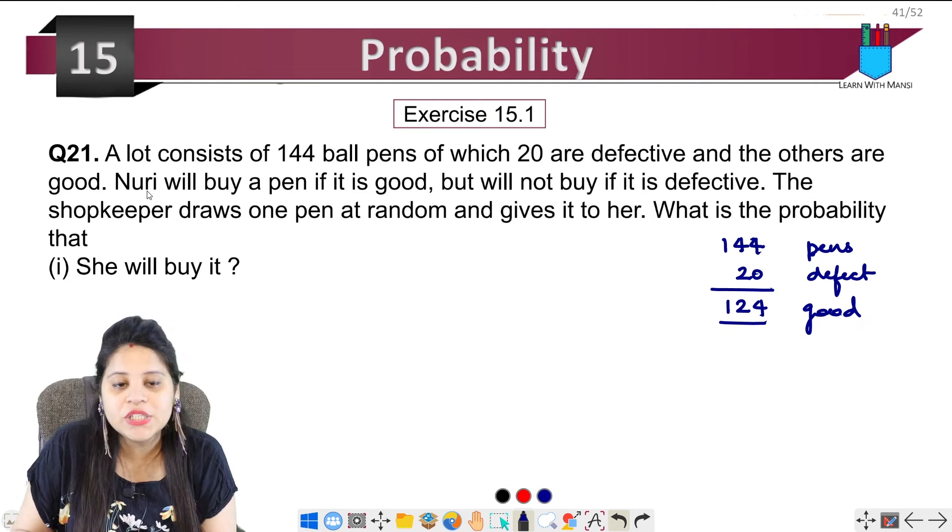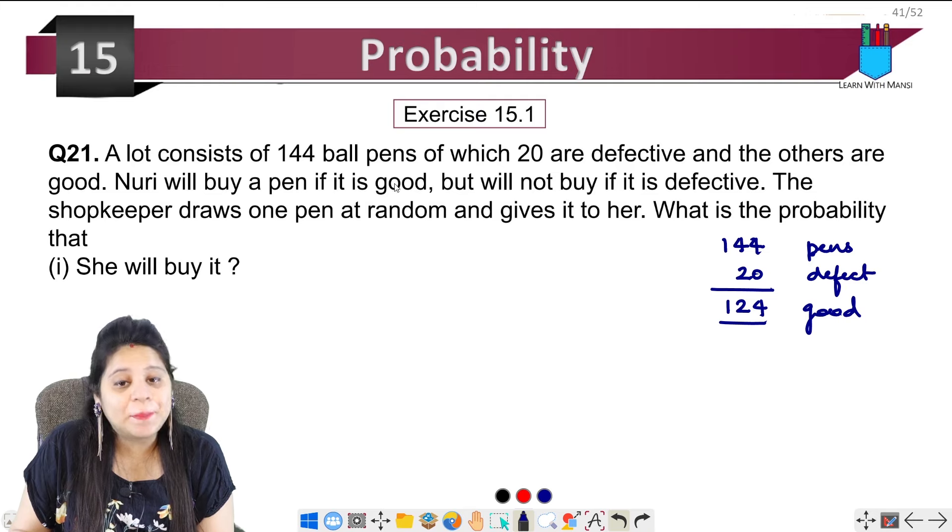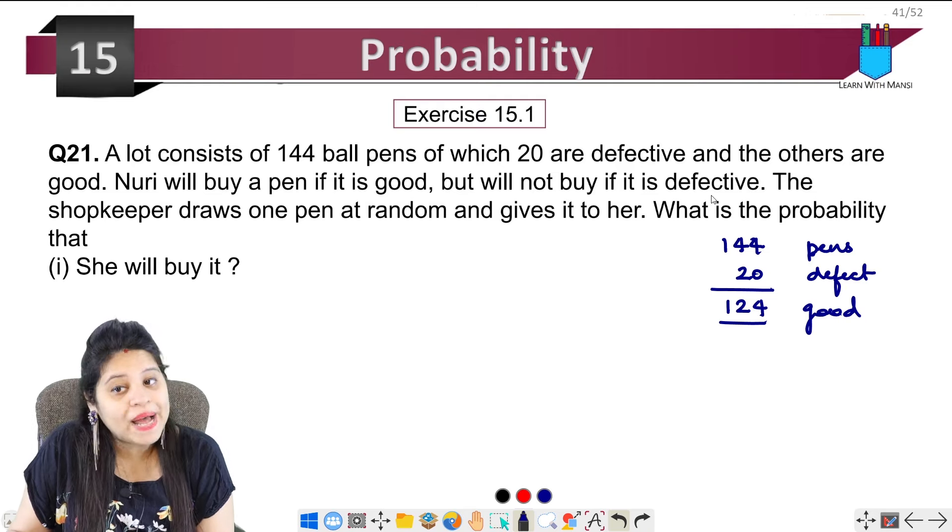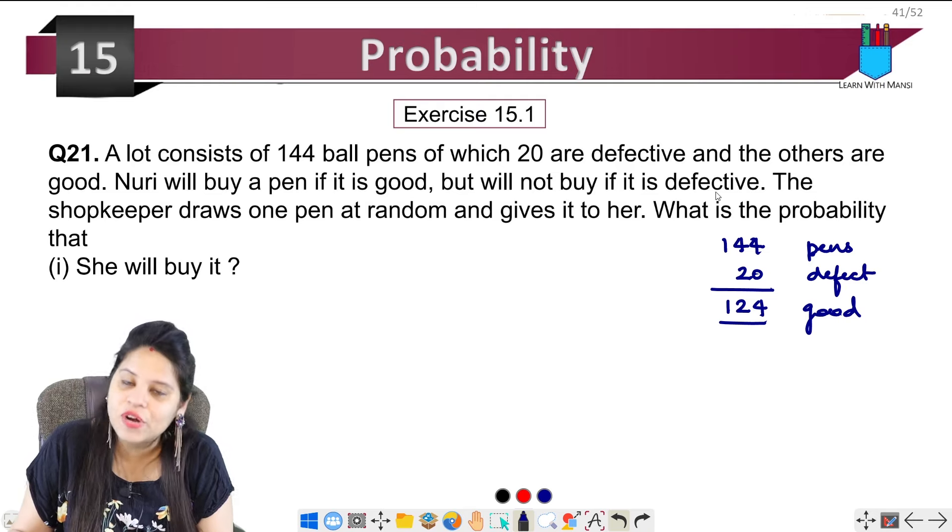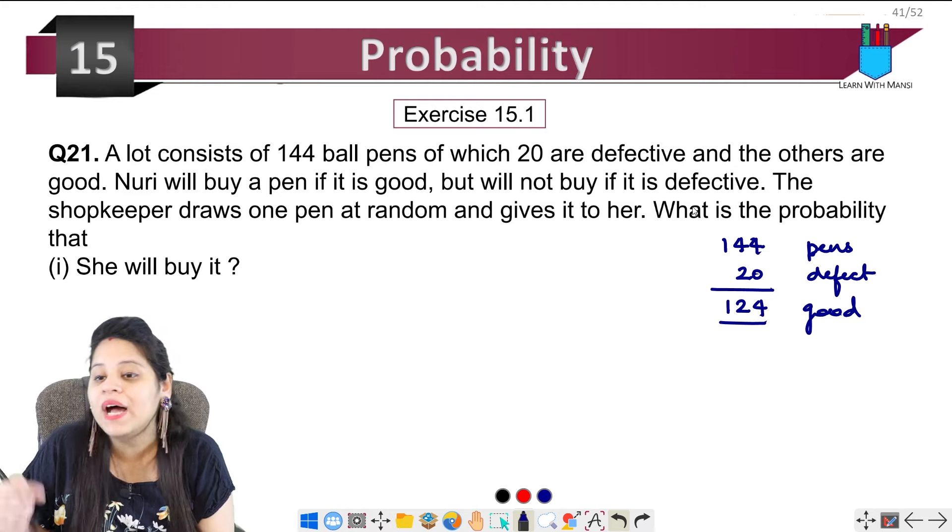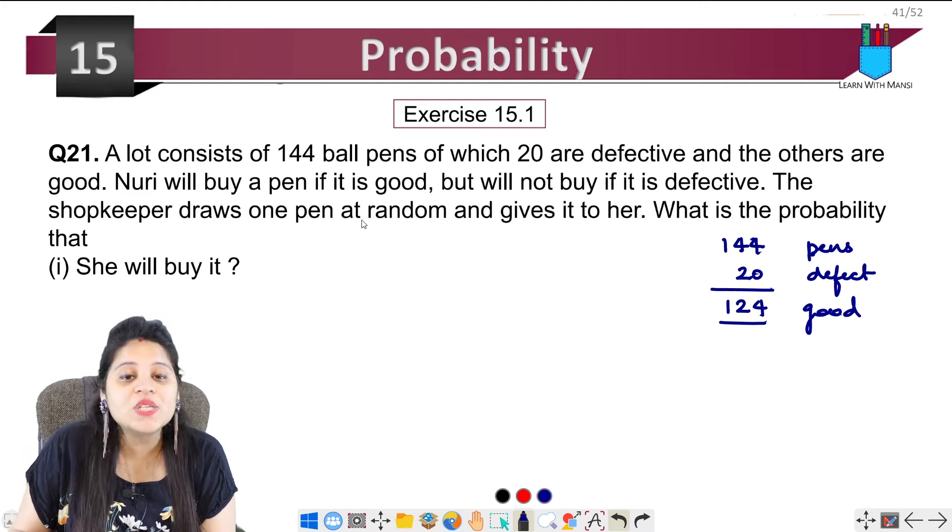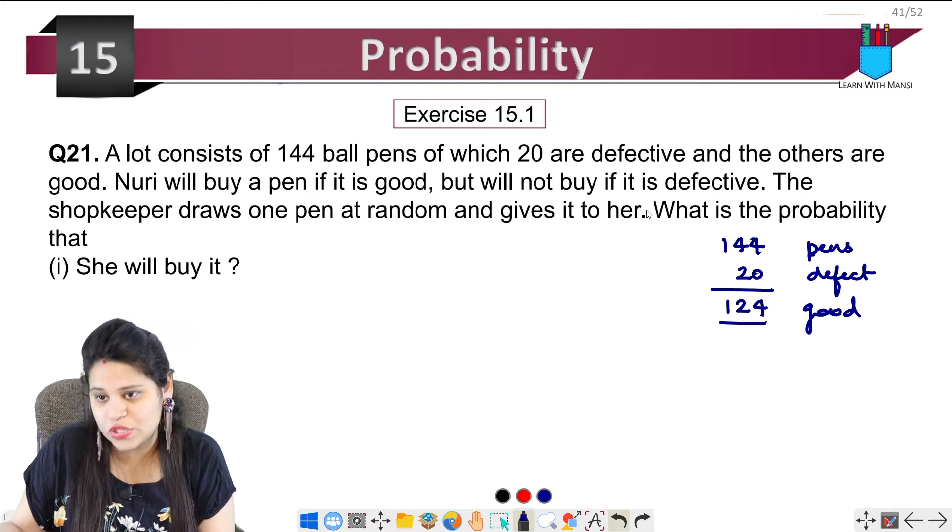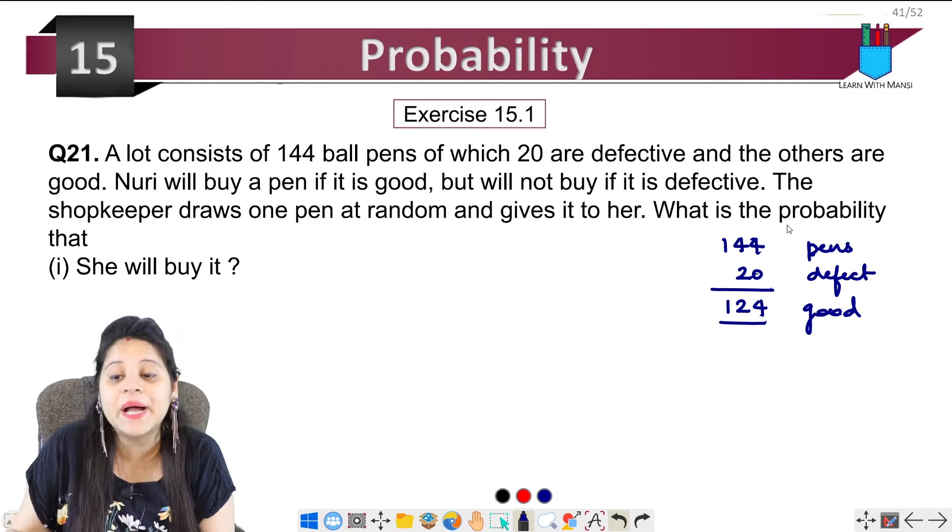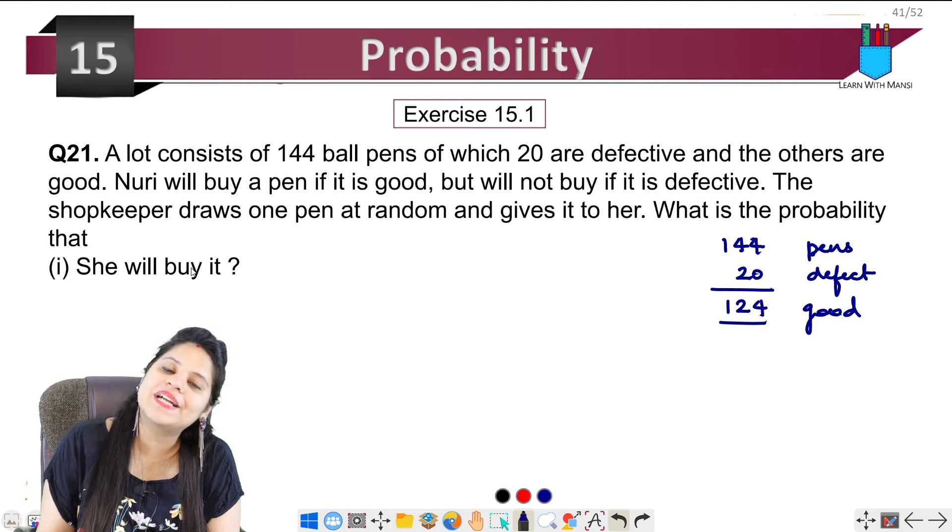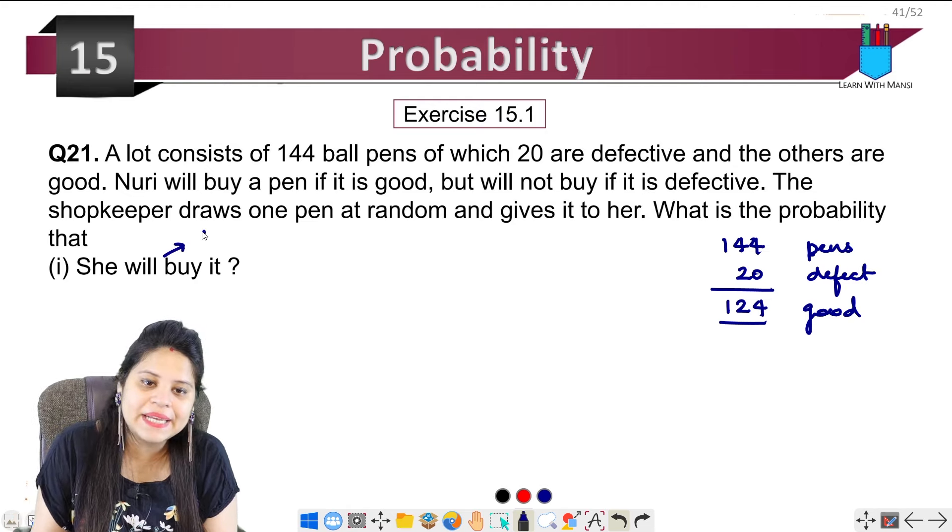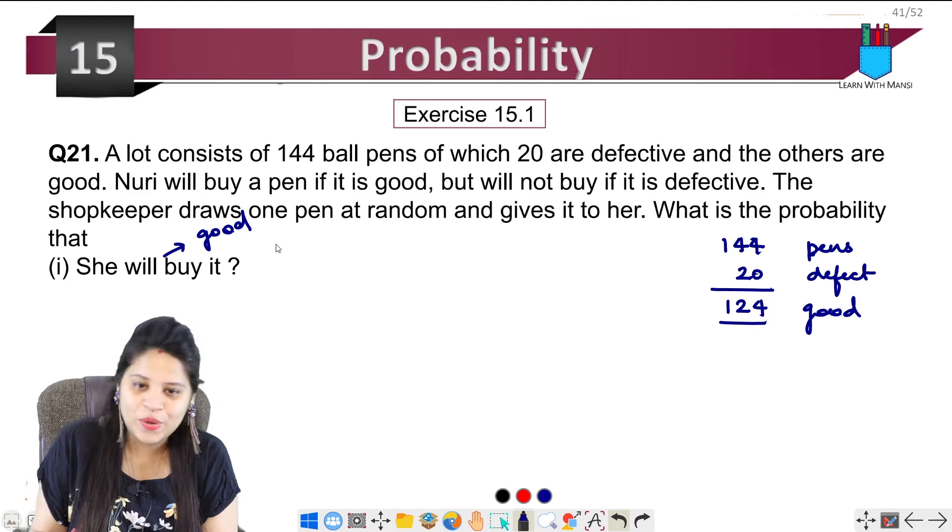Noori will buy a pen if it is good, but will not buy if it is defective. The shopkeeper draws one pen at random and gives it to her. What is the probability that she will buy it? She will buy it if the pen is good. How many good pens are there? 124.